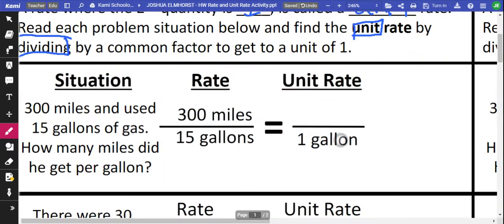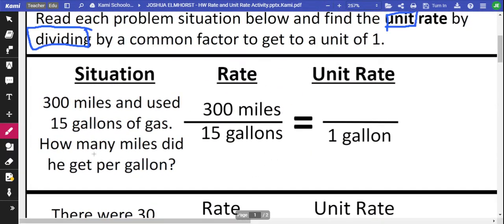So the first situation: 300 miles, 15 gallons. How many miles did he get per gallon? Per gallon means one. So if it's asking the question, how many miles, you're going to have to divide.